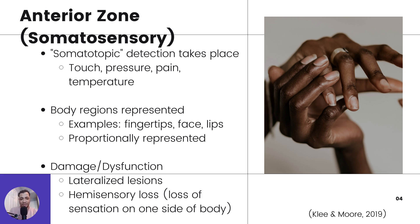Damage to this area — let's call them lesions, which is just any damage to the nervous system, which could be a wound, ulcer, abscess, or tumor — anything like that that happens could result in loss, specifically hemisensory loss, which is just loss of sensation on one side of the body.